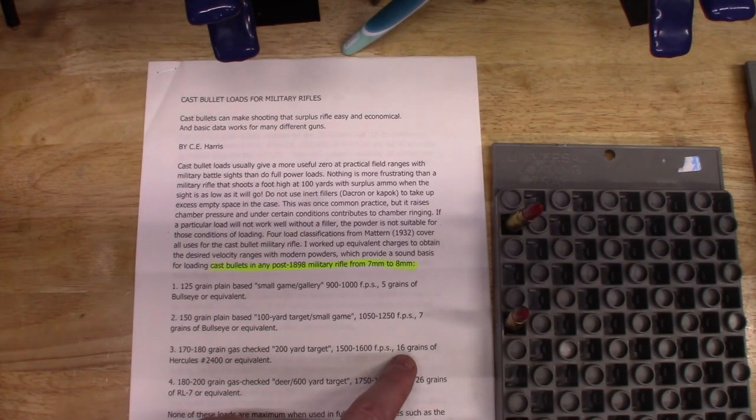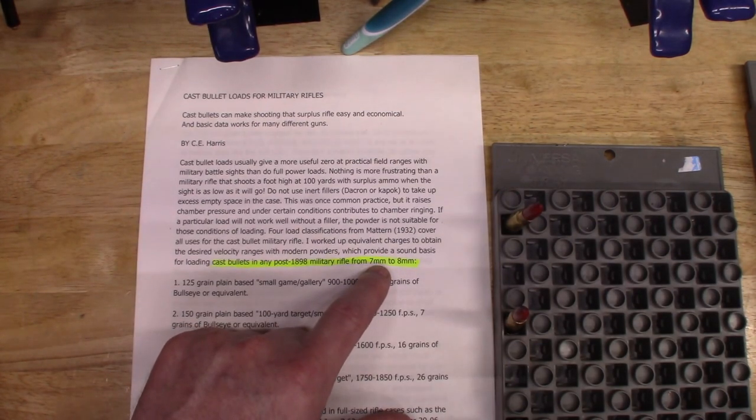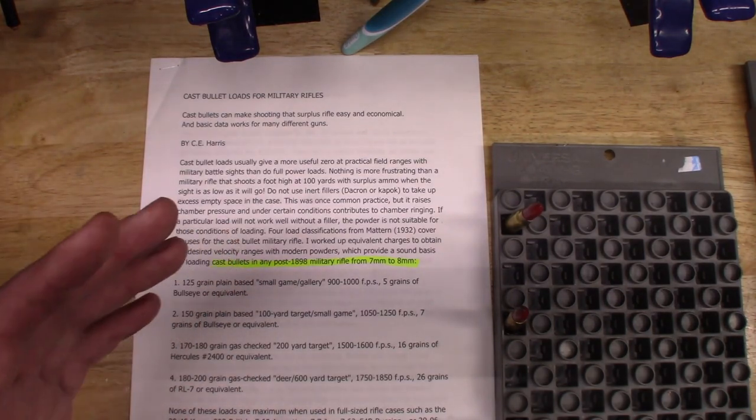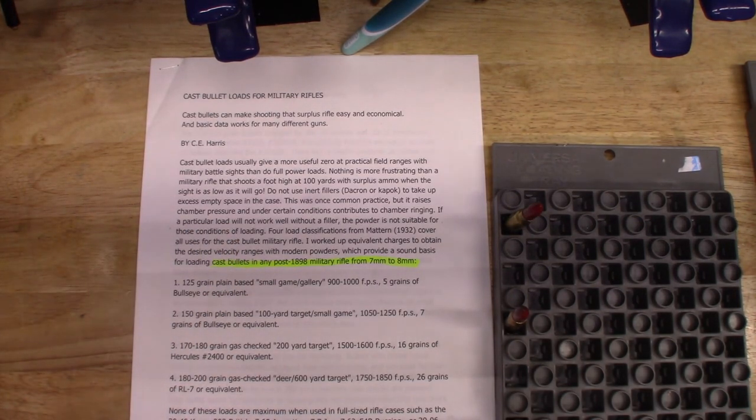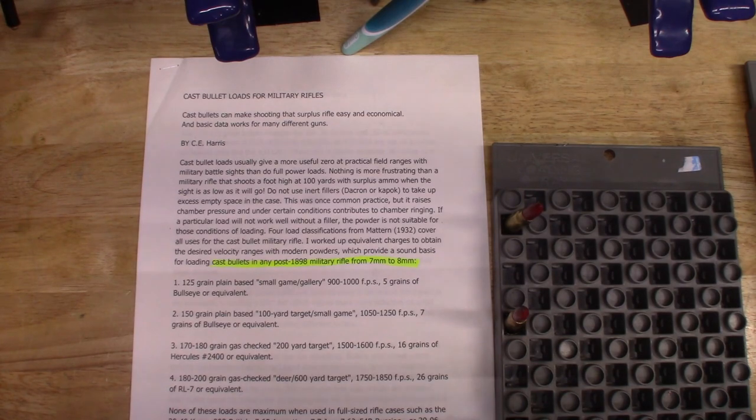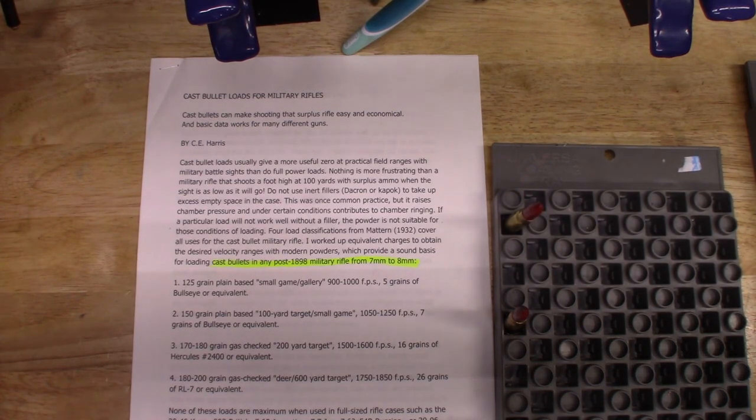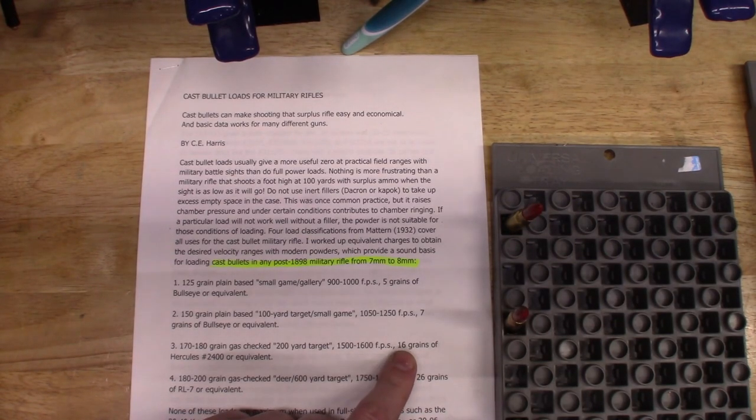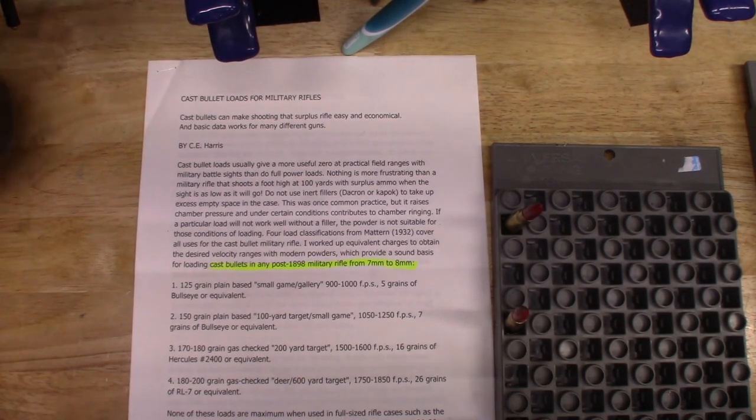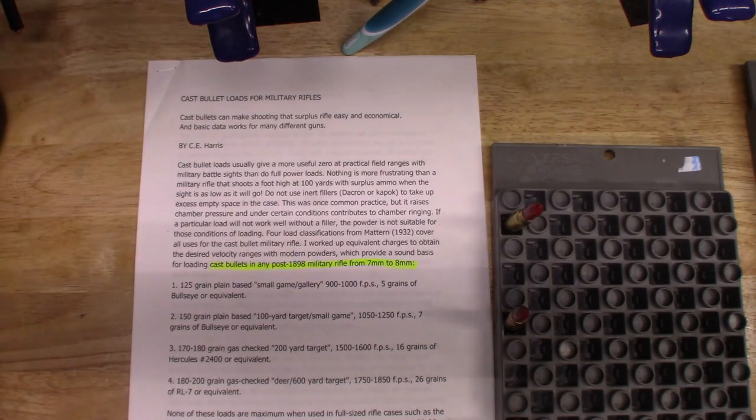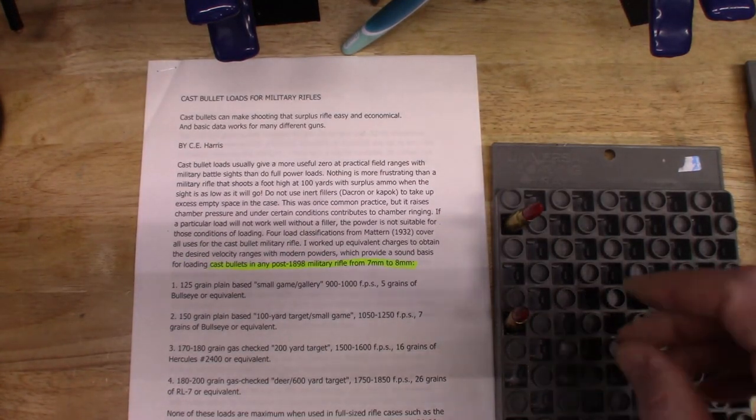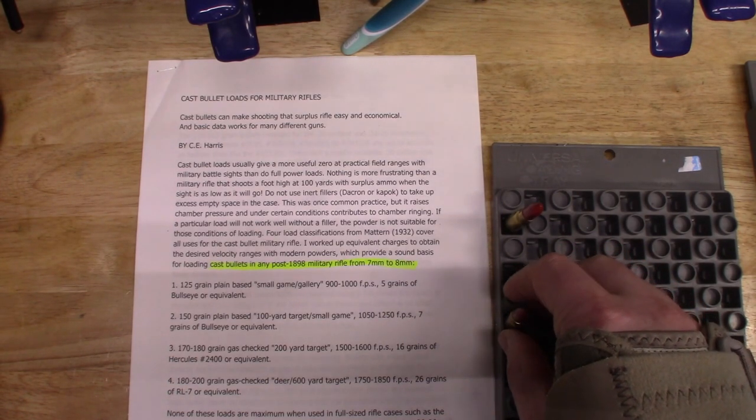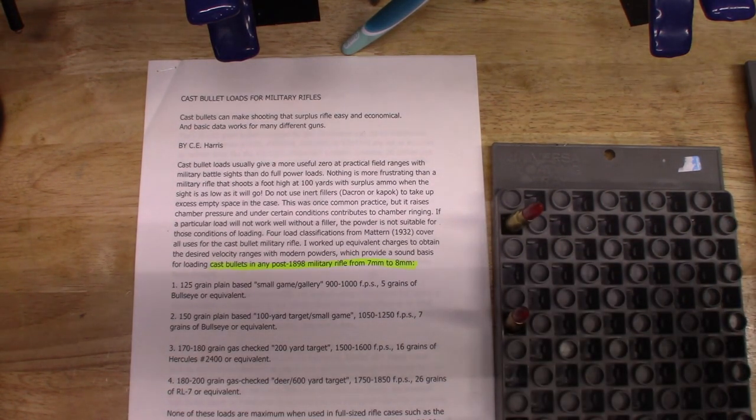Your base guideline here for any of these 7mm to 8mm—so 7.65 Argentine, 30-06, 8mm Mauser, 8x56 rimmed, 7.62x54R—you can start with 16 grains of 2400 and then work up from there. If it shoots well with 16 grains and the case seals fine, then just stop there and go with it.